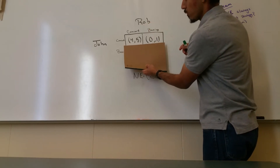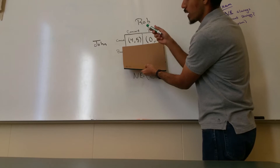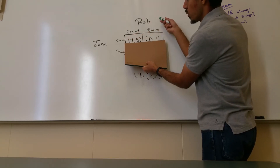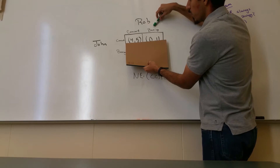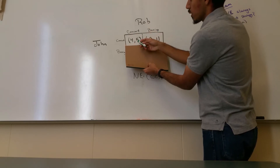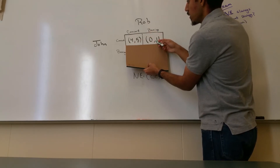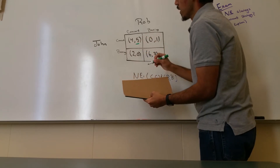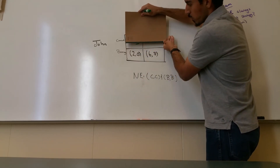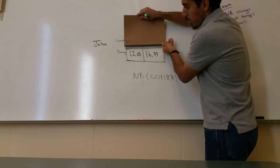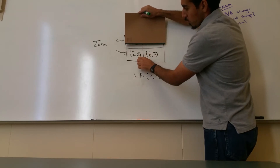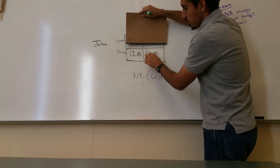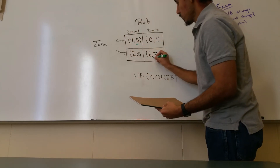First, we cover the bottom row and say: John is going to the concert — should Rob go to the concert or boxing? Well, is 5 bigger than 1? Yes, so we're going to underline 5. We repeat the process with the bottom row: John is going to boxing — should Rob go to the concert or to boxing? Well, 7 is bigger than 0, so we're going to underline 7.